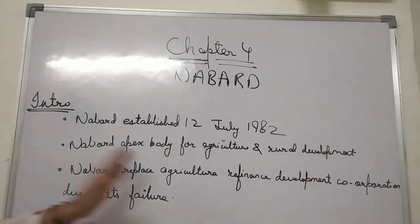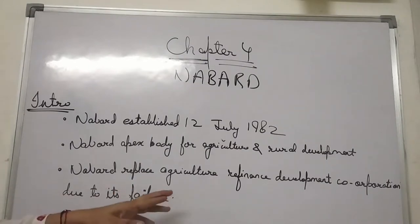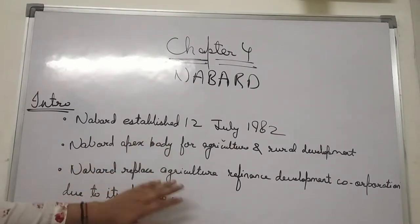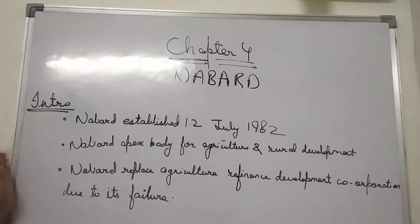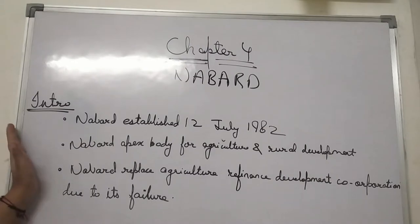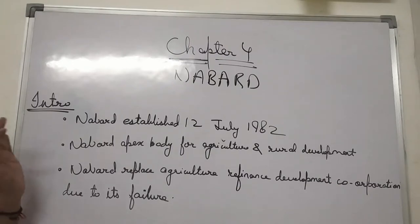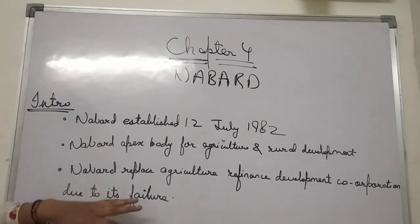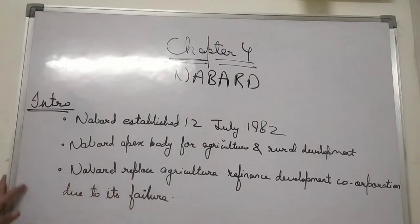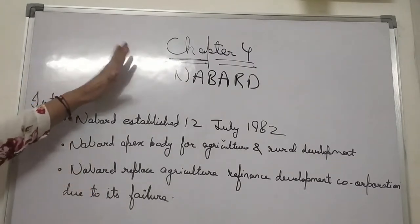Before NABARD, there was the Agriculture Refinance Development Corporation, which failed to adequately finance agriculture and rural development across the country. Because of this failure, a committee was set up to establish a stronger institution — what would become the National Agriculture Bank, i.e., NABARD.